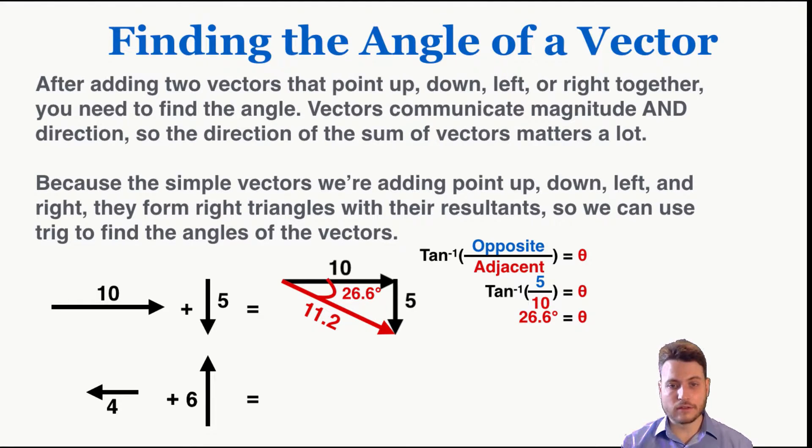So that would be the angle of the vector, the sum of those two smaller vectors. So 10 to the right plus 5 down is equal to 11.2 at an angle of 26.6 degrees south of east.